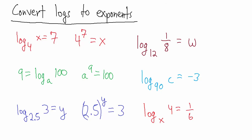Now, the base 12 log of 1/8 equals w. We have a fraction here, but it doesn't really change anything. The base is 12, so the exponent is also base 12. w is the base 12 logarithm of 1/8 — we don't know or care what number w actually is — so w is the exponent. That gives us 12 to the w equals 1/8.